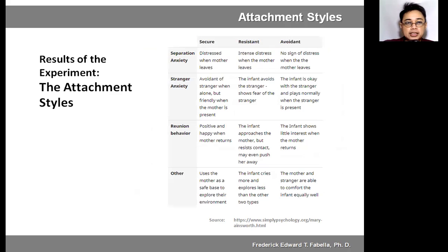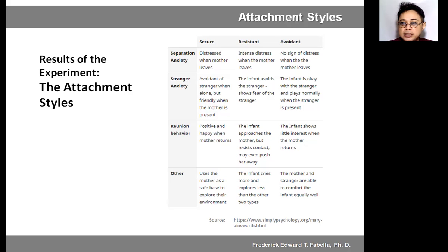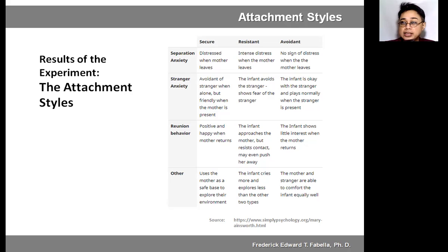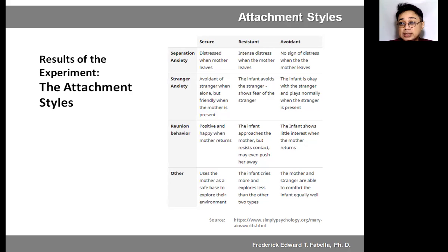Ainsworth identified three types of attachment styles based on the infant's behavior. In secure attachment, the infant is distressed when the mother leaves. In resistant attachment, there is intense distress when the mother leaves. But in avoidant attachment, there is no sign of distress when the mother leaves.